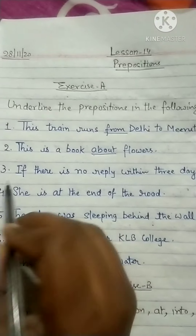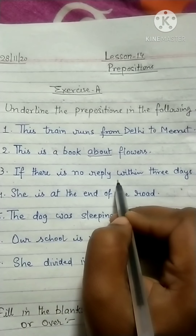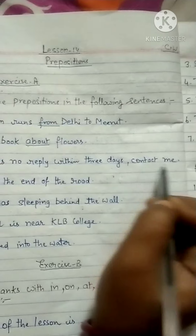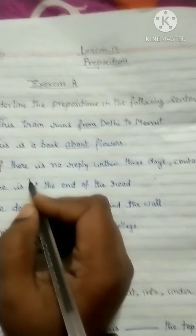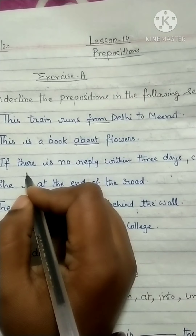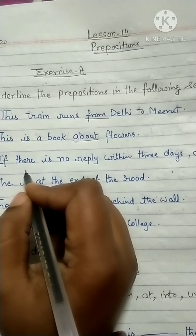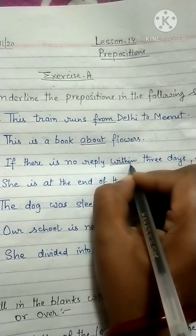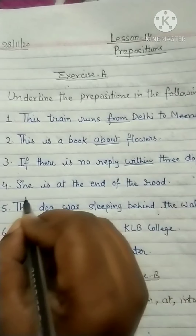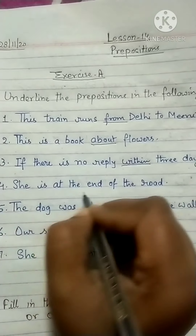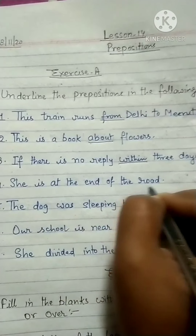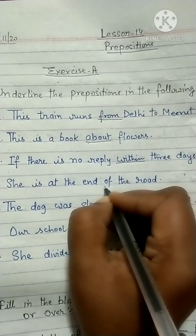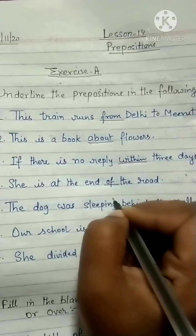Next: 'If there is no reply within three days, contact me' — in this sentence, which one is the preposition? It is 'within'. Next: 'She is at the end of the road' — 'of' is used as a preposition in this sentence, showing the relationship.